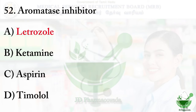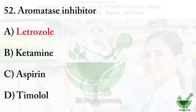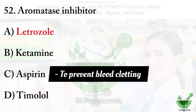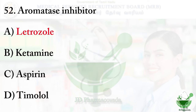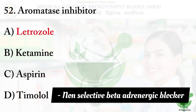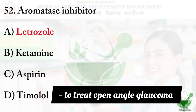Aspirin is an NSAID drug used to treat mild to moderate pain, inflammation, and arthritis. It also lowers the risk of heart attack, stroke, or blood clot. Timolol is a non-selective beta-adrenergic blocker used in the treatment of open-angle glaucoma.